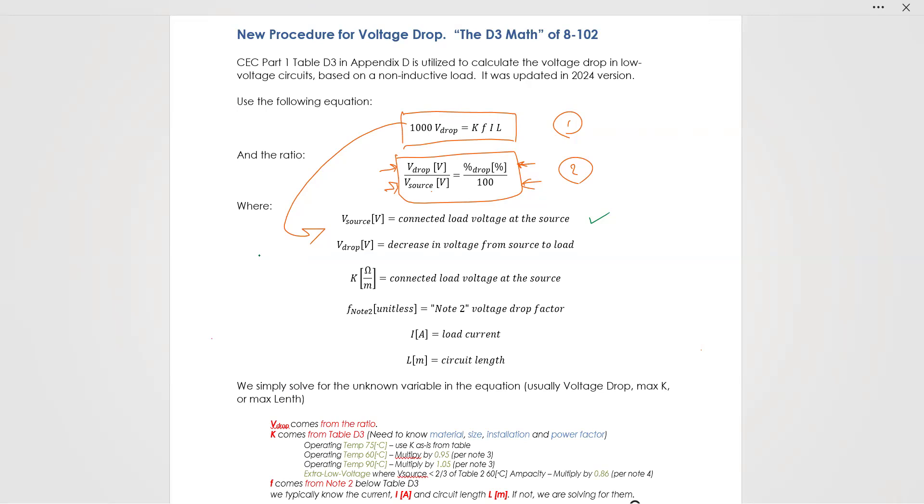If there were 100% voltage drop, then you would get none of the source voltage there. So source voltage should be pretty self-explanatory. Voltage drop is the amount that dropped - it's a difference between from the source to the load. It's the amount that dropped.